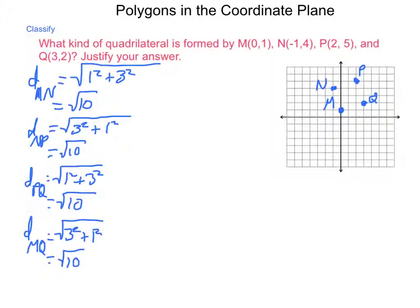So, all of them have the same length. That means that we're looking at either a rhombus or a square.